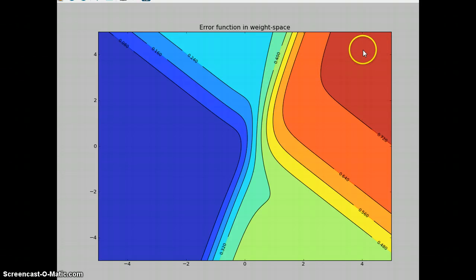So, up here in the corner, right here, let's say this is at 4, 4. This is what the error is if the weight is 4 and the bias is 4. And you can see it's pretty high. This is above 0.72. This line right here, this orange band, is between 0.64 and 0.72. This darker orange band is between 0.56 and 0.64.